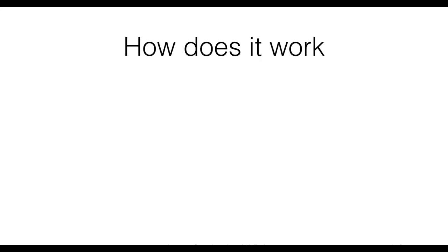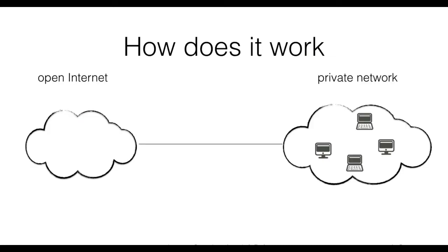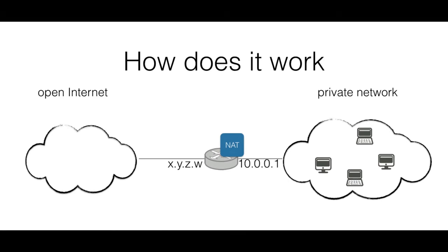A NAT works by accessing and manipulating both network and transport level packet information — therefore, source and destination IP addresses and ports. Let's assume we have a private network with a router implementing NAT. The addresses in the private network are in the network block 10. The router is reachable to the internal network with the IP address 10.0.0.1 and to the open Internet with a public address, say x.y.z.w. The overall idea is that all datagrams leaving the private network have the same source IP address, although they will have different source ports.